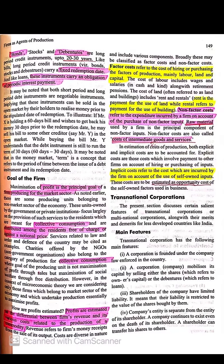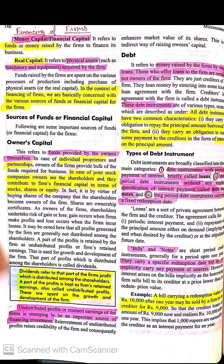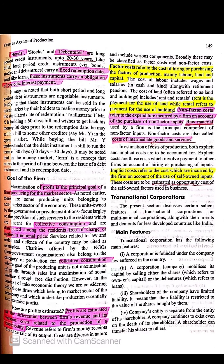Teesra hai bonds and debentures. Bonds and debentures yeh long period credit instruments hain, jaise 20 ya 30 saal ke liye — aur bills and notes humara ek saal ke liye, up to one year. Jab zyada samay ke liye loan lena ho, us form ko kahenge bonds ya debentures. Yahaan par fixed redemption date hoti hai aur these instruments carry an obligation of periodic interest payment, jo bills and notes mein nahi hoti.